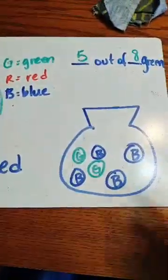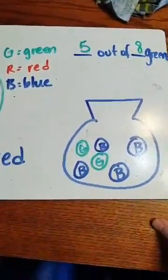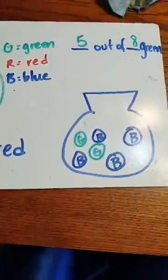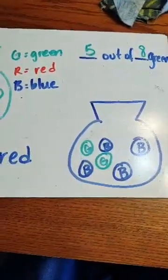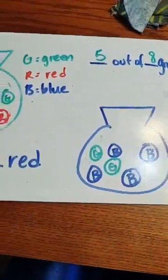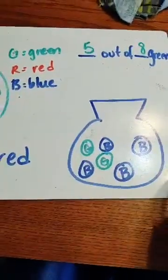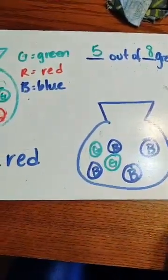All right, let's try another one. Okay, I've got the same colors here. So let's start out with this one. What is it impossible for me to pull out of there? You got it. It is impossible for me to pull red. There are no red balls in here. Okay.